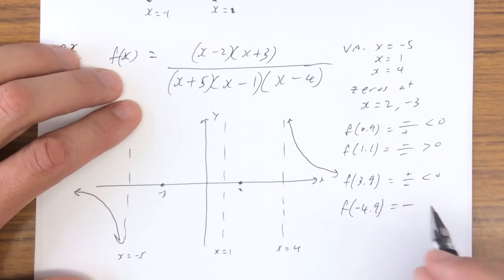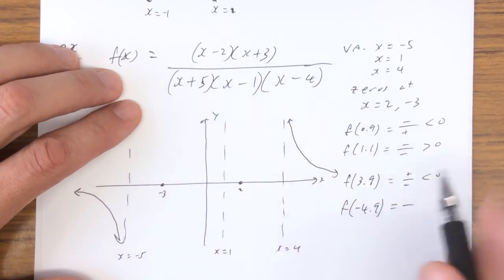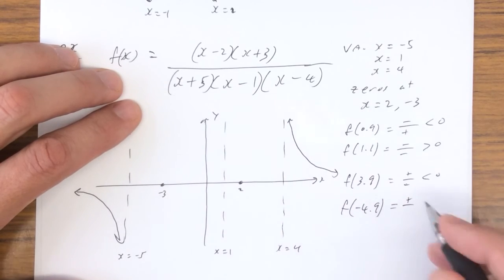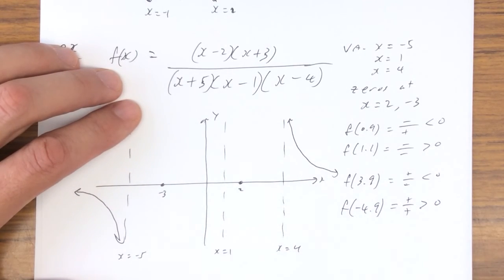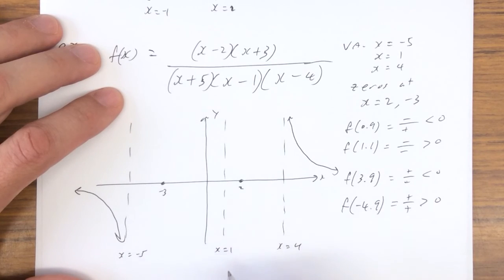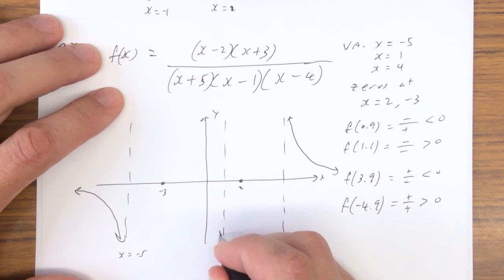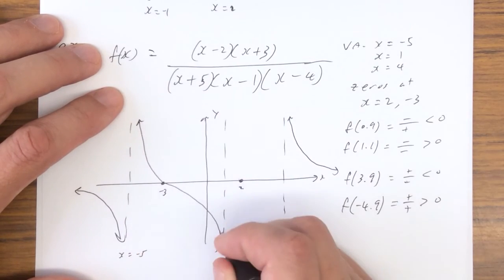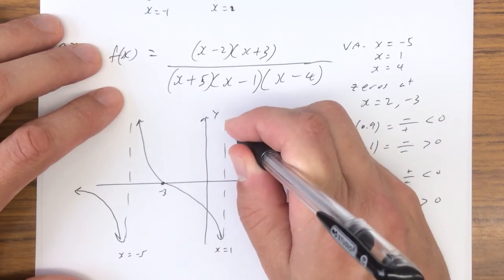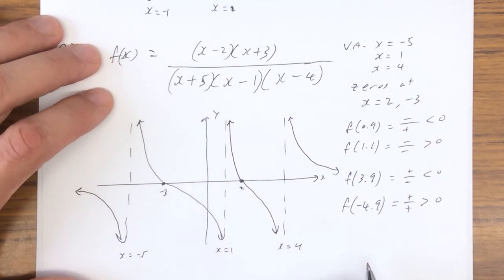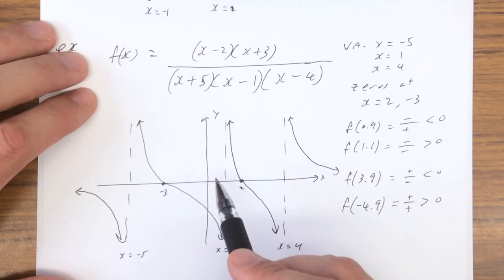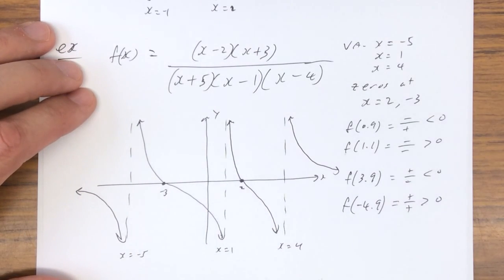For negative 4.9 near x equals negative 5: top is negative, negative — positive; bottom is positive, negative, negative — positive; so greater than zero. So on the left side of x equals 1 it's less than zero — down here — and goes through and up. On the right side of 1.1 it comes down and back. If a graph just touches and goes back up, one of those factors might be squared. And that's it for that video.